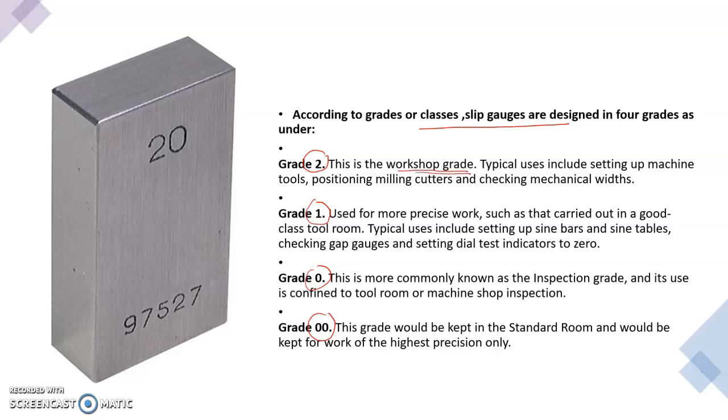Grade 2 is the workshop grade. This one is used in workshop because it has less accuracy. Grade 1 is for more precise work than in workshop, especially in tool room. Tool room is a place where we carry out precise jobs.